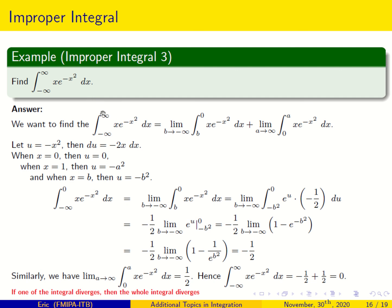Both integrals converge: minus one-half and one-half. So the total integral converges and equals minus one-half plus one-half, which is 0. If one of the integrals had diverged, the entire integral would also diverge.